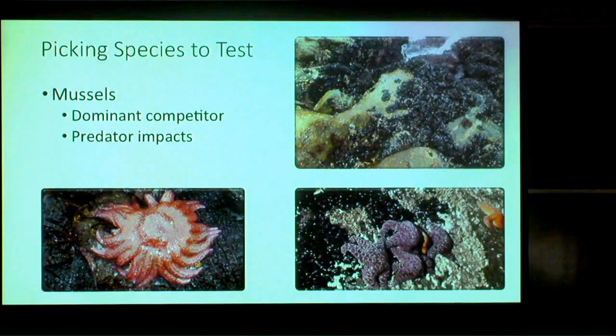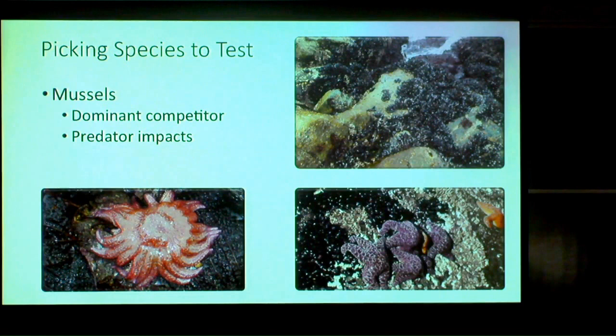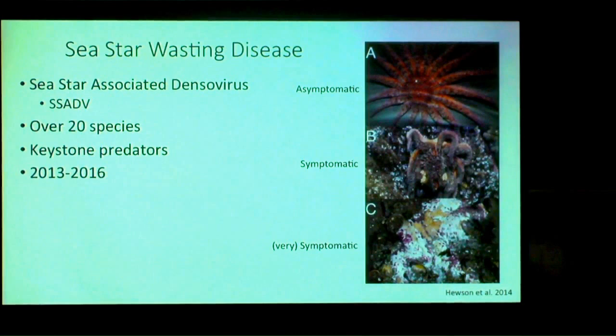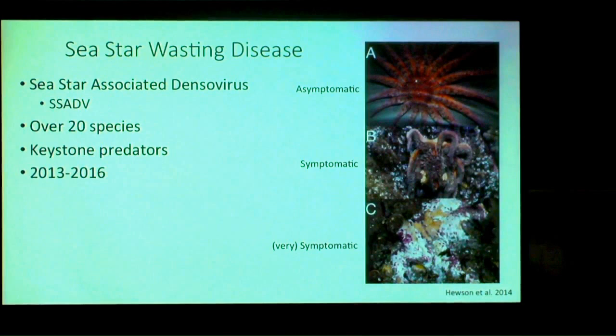One species we wanted to focus on were mussels, because they're competitively dominant — not only here on the central California coast but similar species are dominant on rocky intertidal coastlines around the world. We initially wanted to look at how mussel interactions with the sea star Pisaster ochraceus would be affected, but unfortunately over the last four or five years, sea star wasting disease has really wiped out a lot of sea star populations — not just one species, but many, including sunflower stars, Pycnopodia, and Pisaster. Their populations have crashed at many sites in central California.